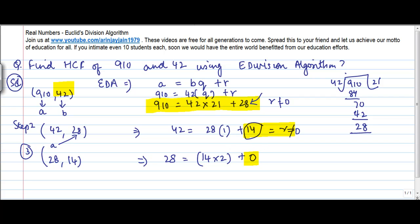Finally, my remainder has become 0. The remainder is equal to 0. So the value of B, which equals 14, is equal to the highest common factor. B equals 14 is my highest common factor which I have found using the Euclid's division algorithm.